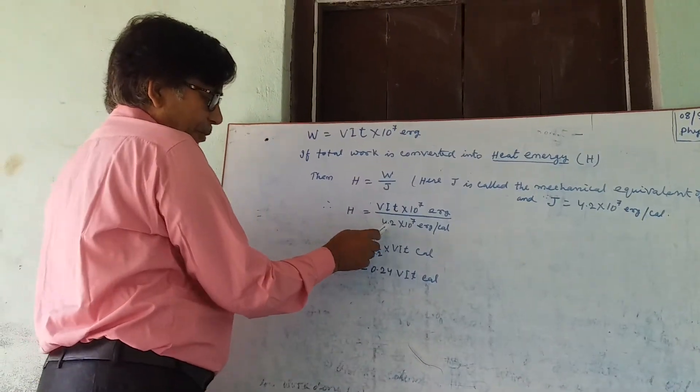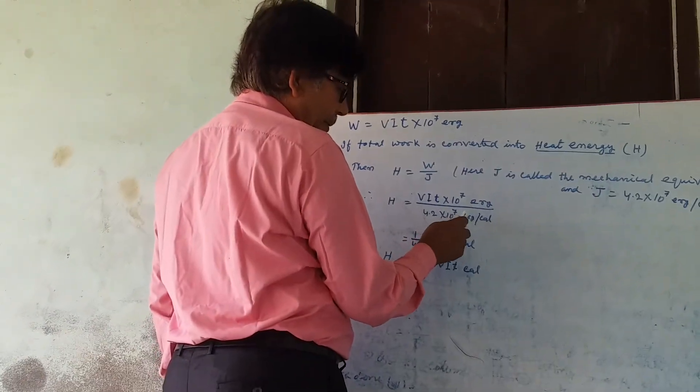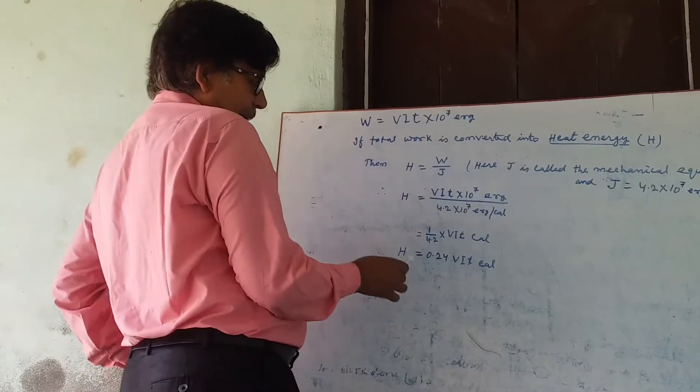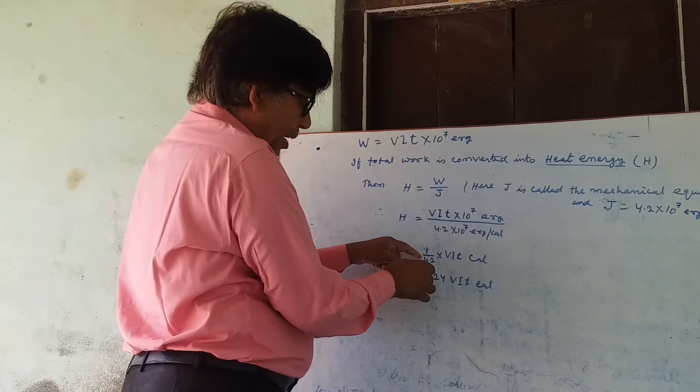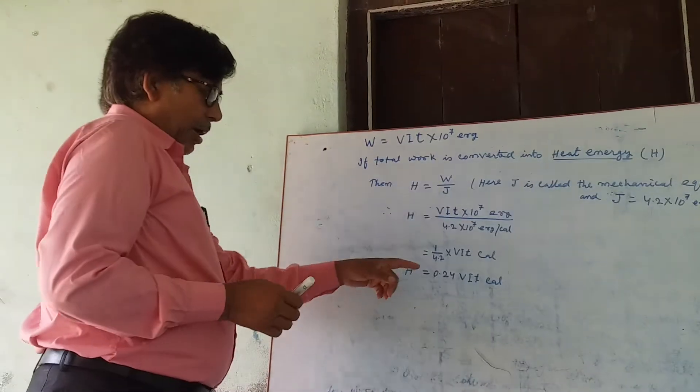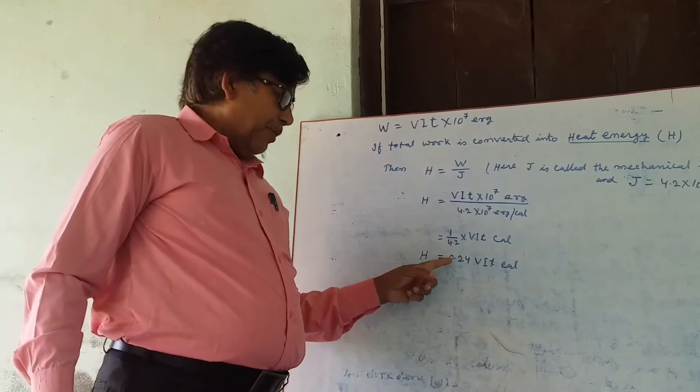Now put this value here. In case of J equals 4.2 into 10 to the power 7 erg per calorie, erg will be cancelled and it will become 1 by 4.2 VIT calorie. If we divide 1 by 4.2, we will get this.